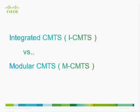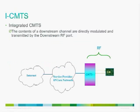Integrated CMTS versus modular CMTS: In an integrated CMTS, downstream channels are directly modulated and transmitted by a downstream RF port that is internal to the CMTS — on a line card — and goes directly via RF to the cable modem. The modular CMTS introduces an external device called an edge QAM. Instead of RF coming straight out of the CMTS, a gigabit Ethernet medium carries what's called a DEPI protocol from the CMTS to the edge QAM, which then converts those DEPI signals into the appropriate RF for the cable modem.